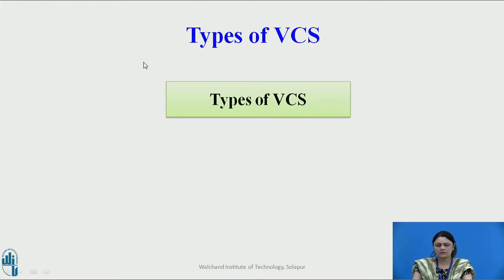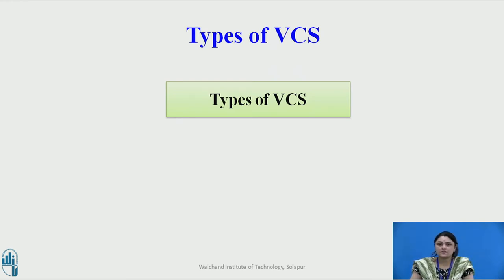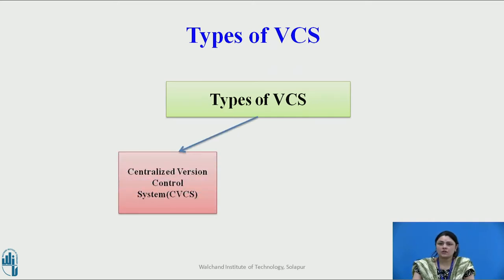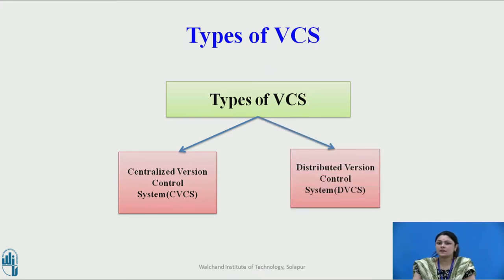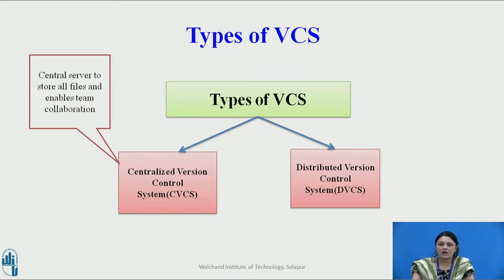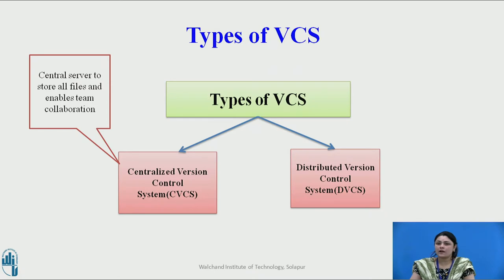Now let us look at the types of version control systems (VCS). A centralized version control system (CVCS) uses a central server to store all files and enables team collaboration. However, the major drawback is a single point of failure — if the central server goes down for an hour or more, nobody can collaborate. In the worst case, if the central server's disk gets corrupted and a proper backup has not been taken, you will lose the entire history of your project.